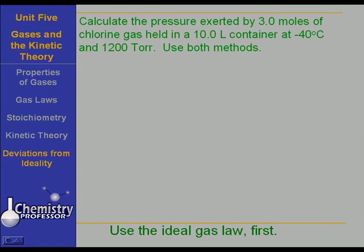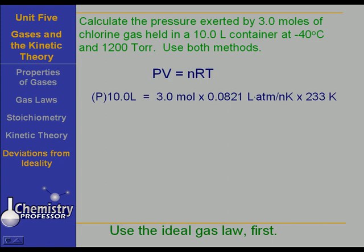So let's use the ideal gas law first. PV equals nRT. Well, the pressure, which is what we're looking for, times the volume of 10 liters is equal to, of course, the number of moles. And we have 3 moles of the gas here, times R, which is 0.082 liter atmospheres per mole Kelvin, something you were born knowing, times 233 kelvins. And I have the pressure, then, is 5.74 atmospheres.